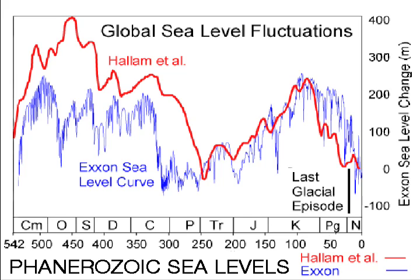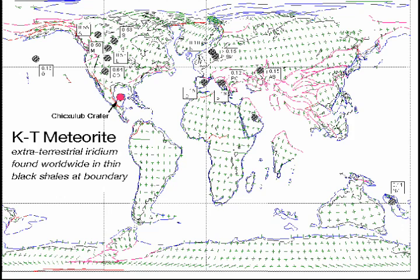The worldwide occurrence of unusual quantities of a rare mineral in strata representing an instant of time provides not only the demonstration of the global effects of a large meteor strike, but offers a means of precise correlation, as this Cretaceous-Tertiary boundary event demonstrates.